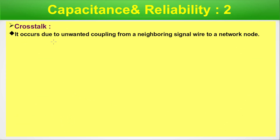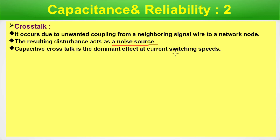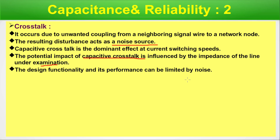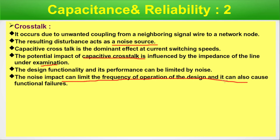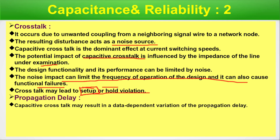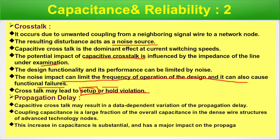Crosstalk occurs due to unwanted coupling from a neighboring signal wire to a network node, and the resulting disturbance acts as a noise source. Capacitive crosstalk is the dominant effect at current switching speeds. The design functionality and performance can be limited by noise — the noise impact can limit the frequency of operation and cause functional failures. Crosstalk may lead to setup or hold timing violations. Coupling capacitance is a large fraction of overall capacitance in dense wire structures of advanced technology nodes, with a major impact on propagation delay.